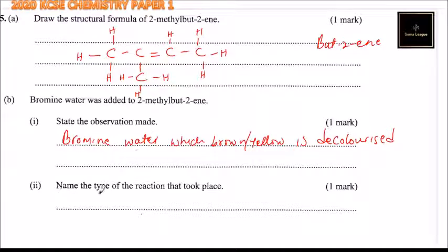Part 2, name the type of reaction that took place. This kind of reaction where bromine water is decolorized by 2-methylbutane is known as addition reaction. It is known as addition reaction. So that's how you answer that question and you'll be able to get 3 marks.